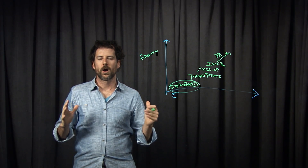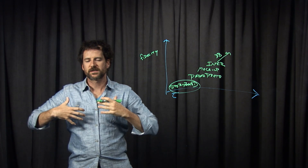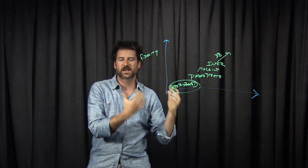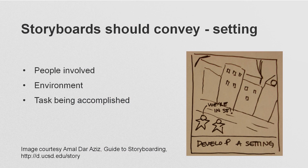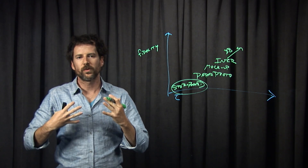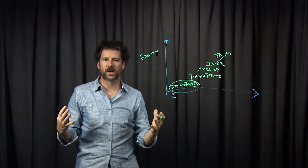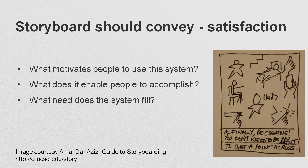So what makes for a good storyboard? A storyboard takes you from a setting — something that starts out at the beginning where you've got a problem, a need, or an opportunity — through to satisfaction. The setting of a storyboard shows you who are the people involved, what's the environment, and what's the task they're trying to accomplish. In this example from Amal's drawing, there are some friends who are out in San Francisco looking for something to do — that's the setting. The middle frames of a storyboard will then show you the sequence: what steps are involved, how do you get from the setting using your design, what would lead somebody to use that app, what's the task and how does it unfold? At the end, you have the satisfaction — you've gotten to the point where the interface has helped alleviate the problem or achieved the opportunity from the beginning.